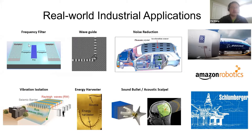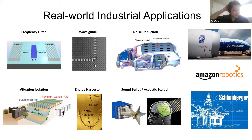There are many real-world industrial applications for the acoustic and mechanical properties created by geometric structures and architectural materials. For example, frequency filters exist in every cell phone, using mechanical properties to filter noise from electrical signals. We can also create waveguides to direct acoustic energy, use phononic crystals for automobile noise reduction, vibration isolation for buildings and bridges, and energy harvesting from vibration.